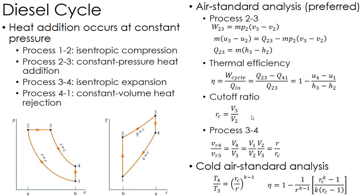Process 1 to 2, that first isentropic process, is the same as it was for the Otto cycle. However, that second isentropic process, I have that temperature ratio equaling the cutoff ratio over the compression ratio up to the k minus 1, where again k is constant—that's the specific heat ratio.